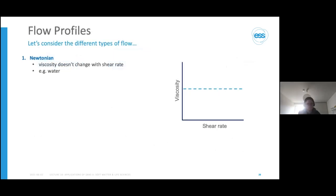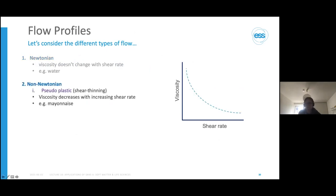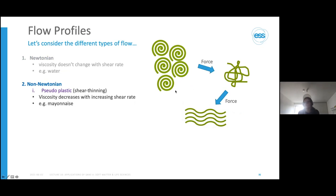In rheology experiments we typically look at flow profiles. Newtonian fluids have a viscosity that doesn't change with shear rate—no matter how fast you shear water, its viscosity stays the same. Non-Newtonian materials include pseudoplastics or shear-thinning materials: the more you shear them, the less viscous they become. Mayonnaise is gloopy in the jar but becomes less viscous once you start spreading it. Think of polymer chains coiled together—as you apply force, the coils disentangle and chains slide smoothly over each other, resulting in lower viscosity.